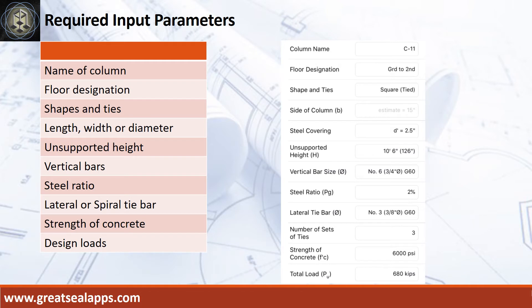Enumerate input parameters required. Column name: C11. Floor designation: ground to second. Square shape, tied column. Unsupported height: 10 feet, 6 inches.